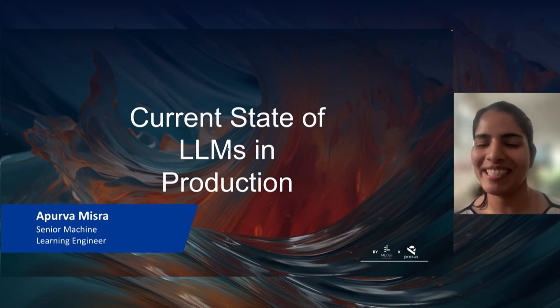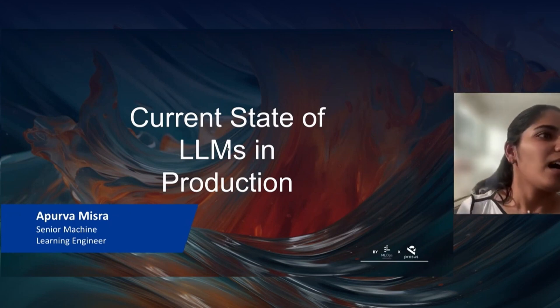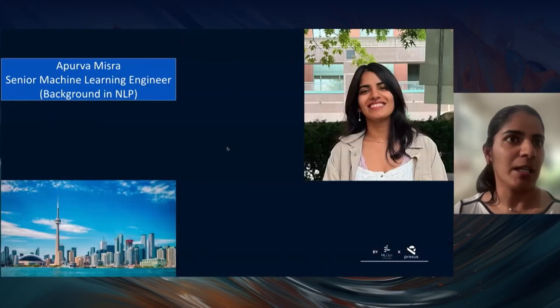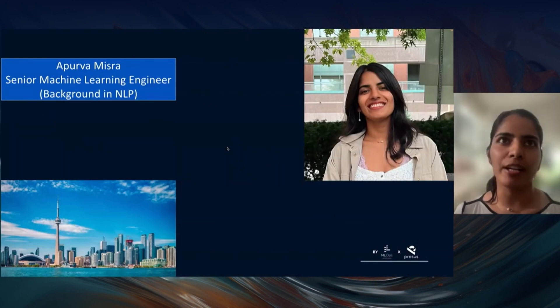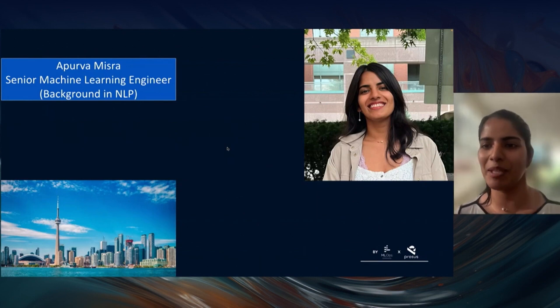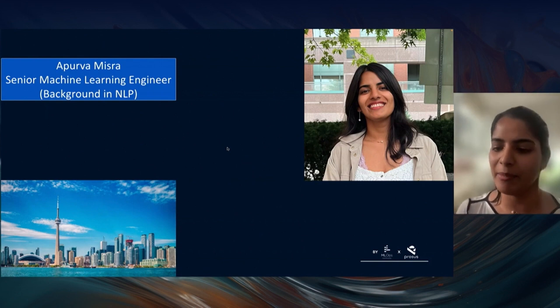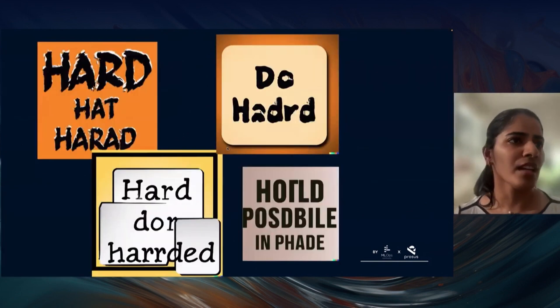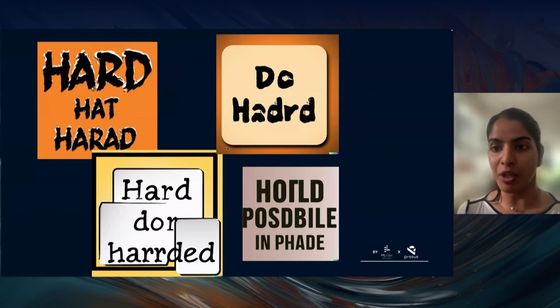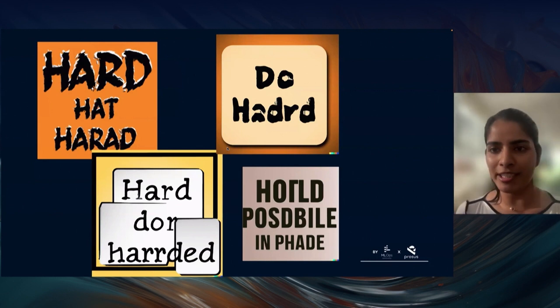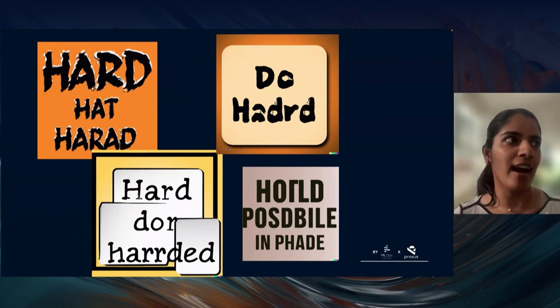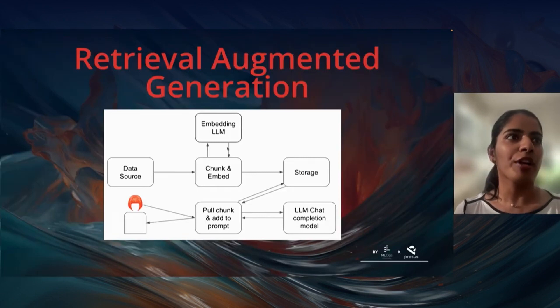My name is Apurva Misra. I'm a senior machine learning engineer at Truck Stop, with a background in natural language processing, based in Toronto. I'm going to speak about the current state of LLMs in production. Because it's hard, I asked DALL-E to generate images with the text 'hard' — which was really hard for DALL-E to do.